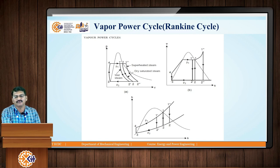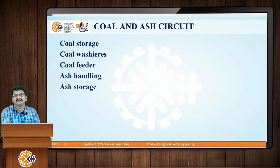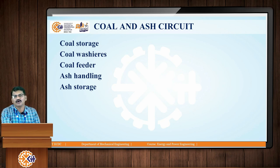In our country a major quantity of coal is available, so we use coal as fuel in the steam turbine power plant. By burning the coal we get steam; the steam goes to the turbine where we generate power, then it goes to the condenser and then to the pump, and the same water is circulated in that circuit. This is the vapor power cycle.